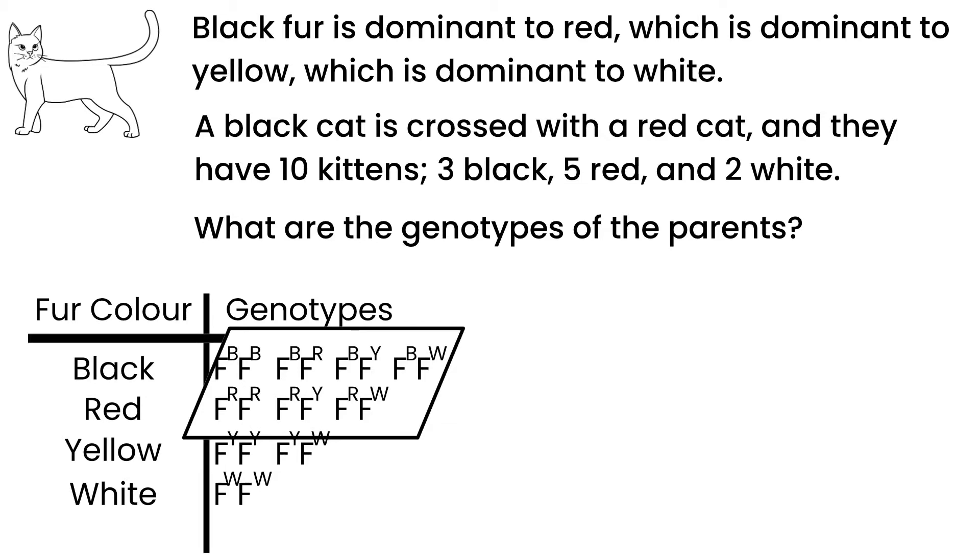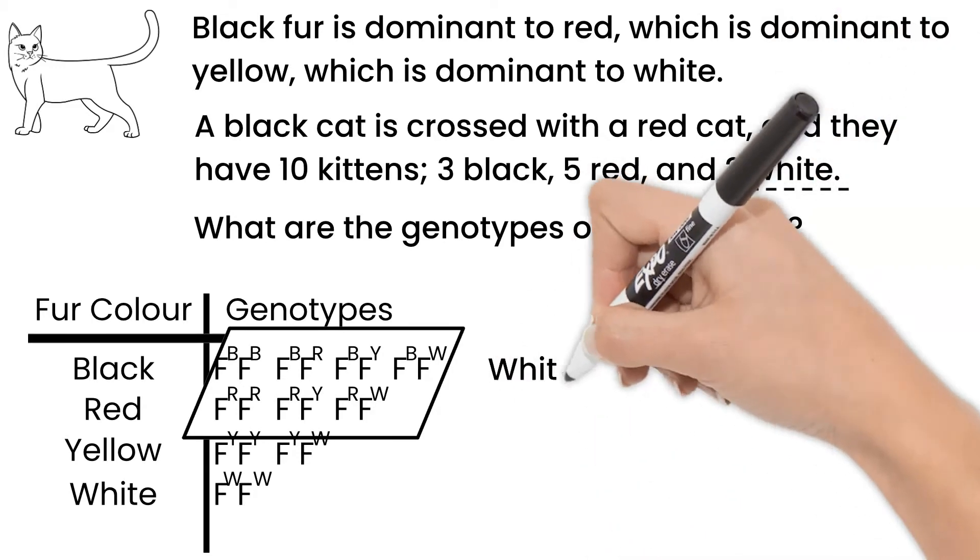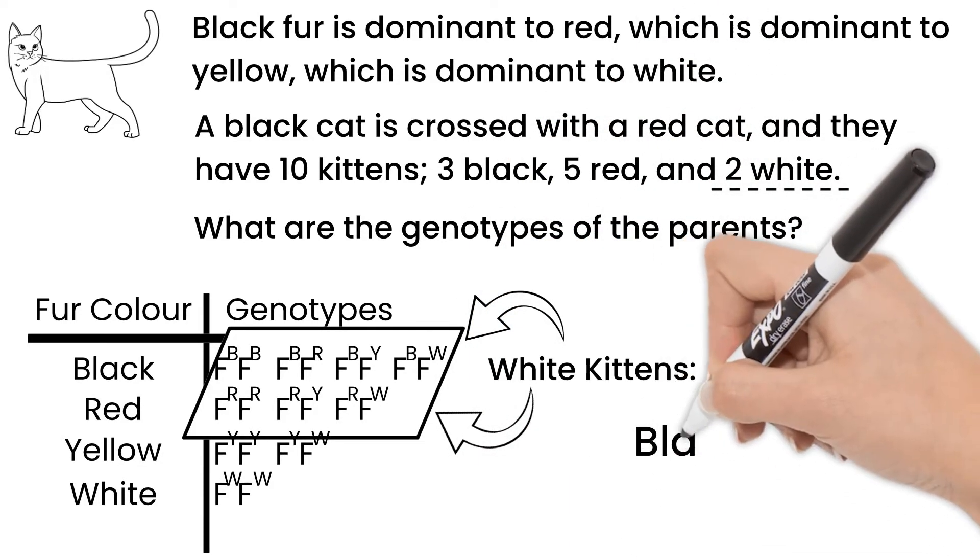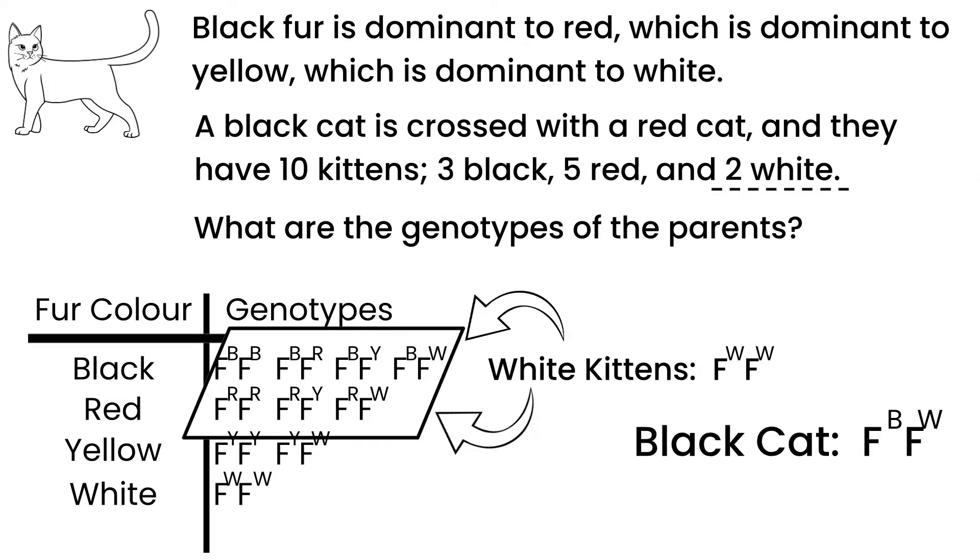The key to this question are those white kittens. The white kittens have to be homozygous white. For them to get two white alleles, they must have gotten one from each parent cat. So the black cat is heterozygous black and white, and the red cat is heterozygous red and white.